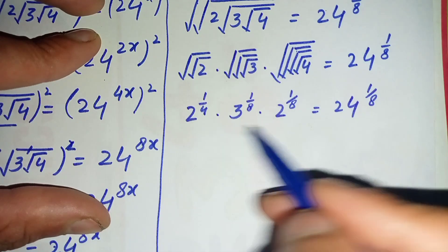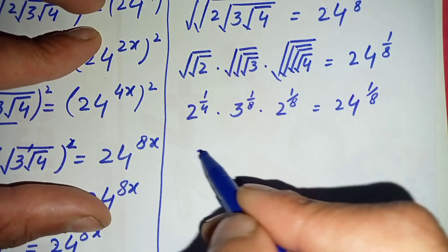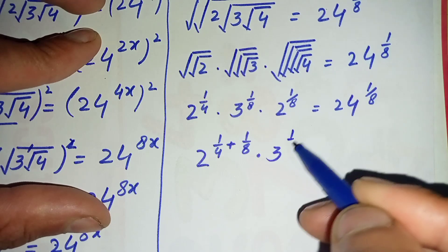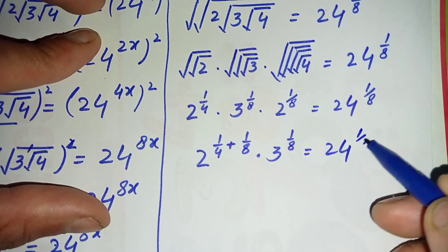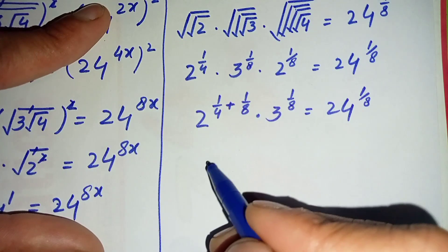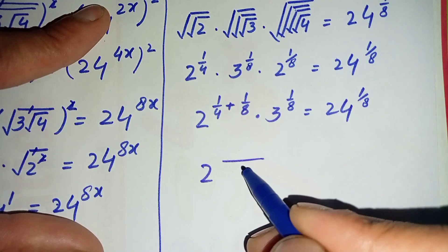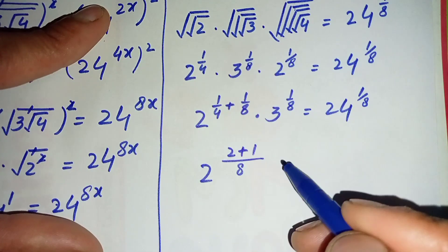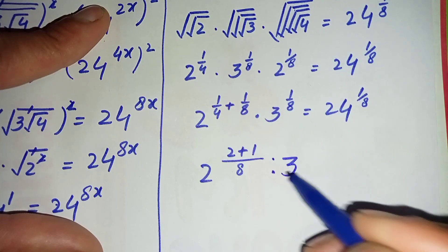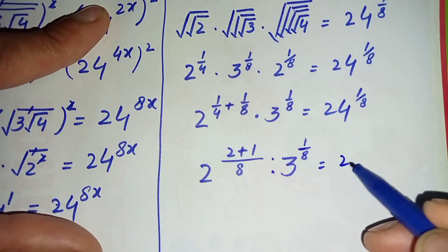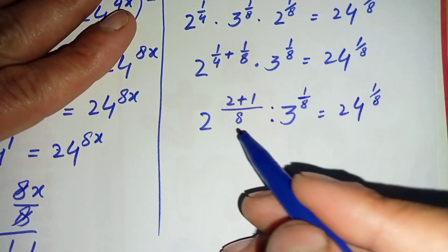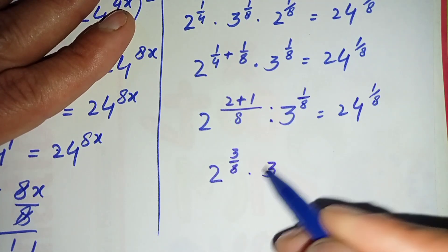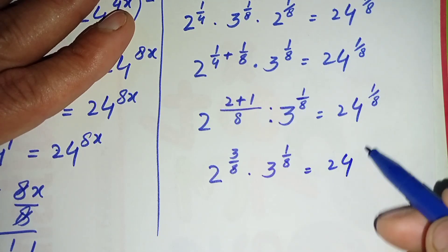In the left-hand side, the two bases of 2 are the same, so we add their powers: 2 raised to power (1/4 plus 1/8) times 3 raised to power 1/8 equals 24 raised to power 1/8. Taking the LCM of 4 and 8, which is 8: (2/8 plus 1/8) gives 3/8. So this becomes 2 raised to power 3/8 times 3 raised to power 1/8 equals 24 raised to power 1/8.